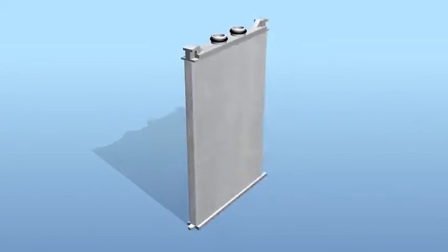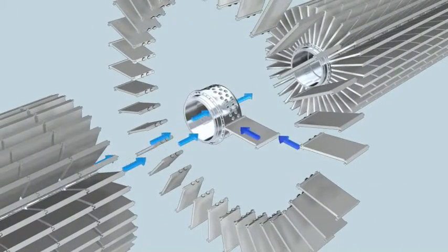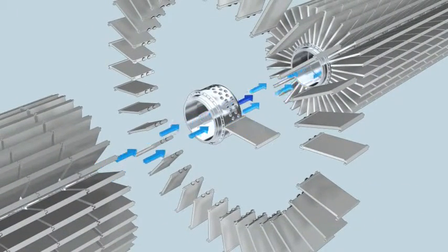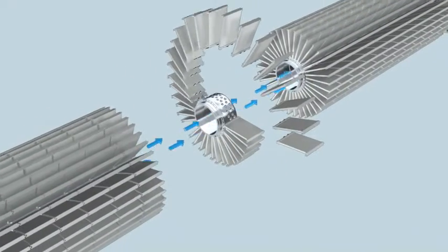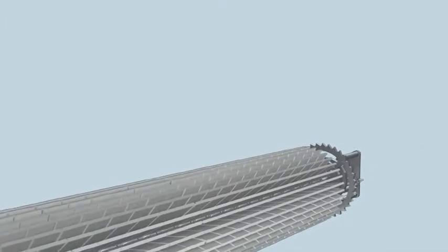This element is called a cassette. Thirty-five cassettes connected to a joined-in collector pipe unit form a package. Twenty-six packages attached to each other form a cartridge which is installed in the filter housing.